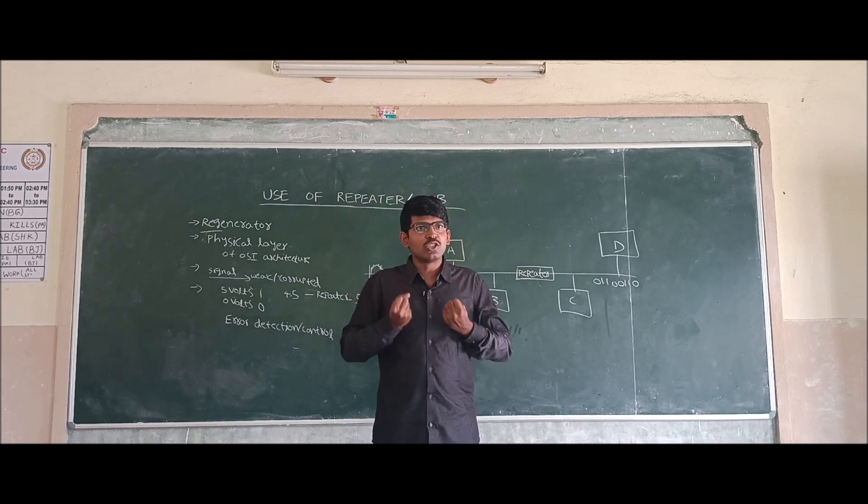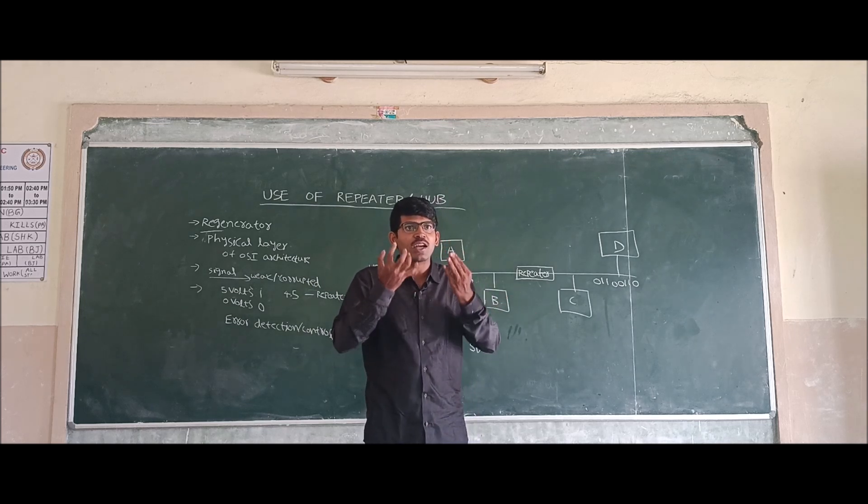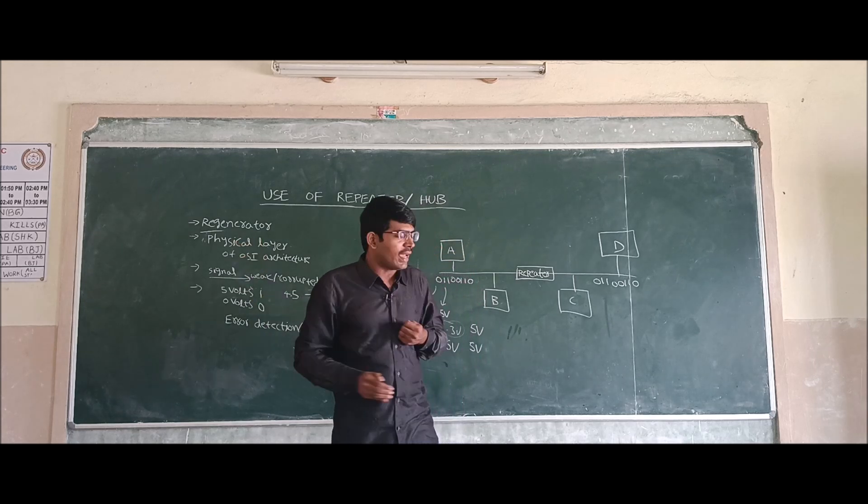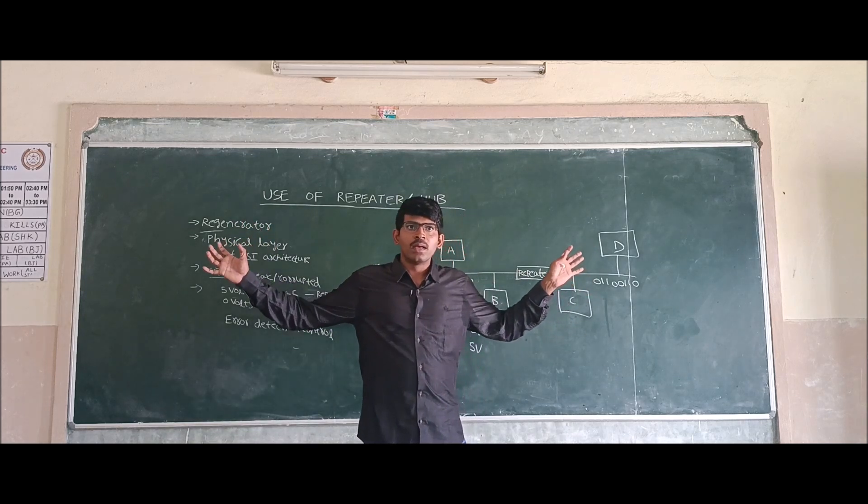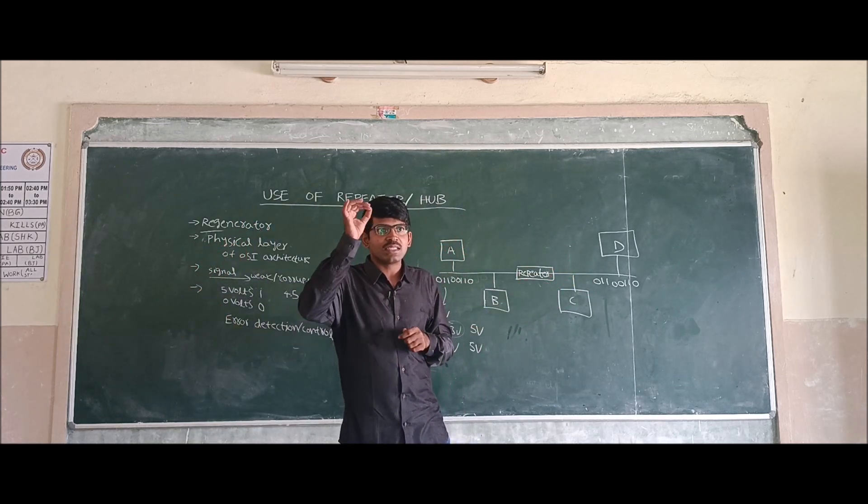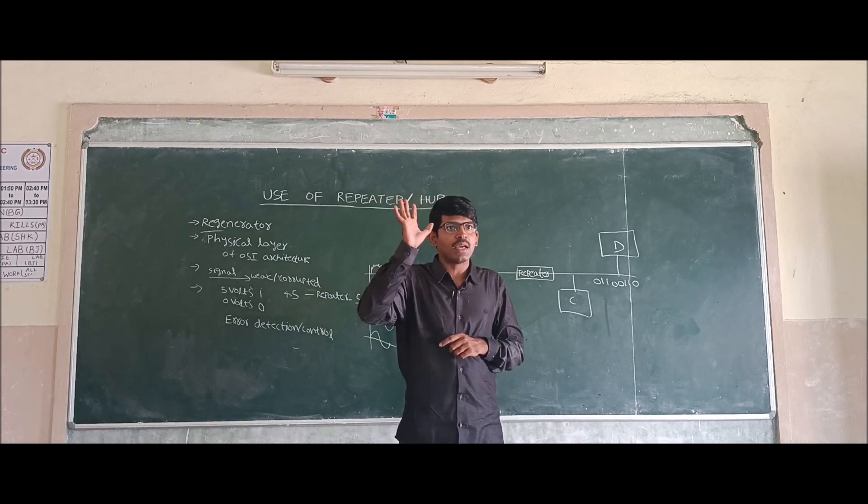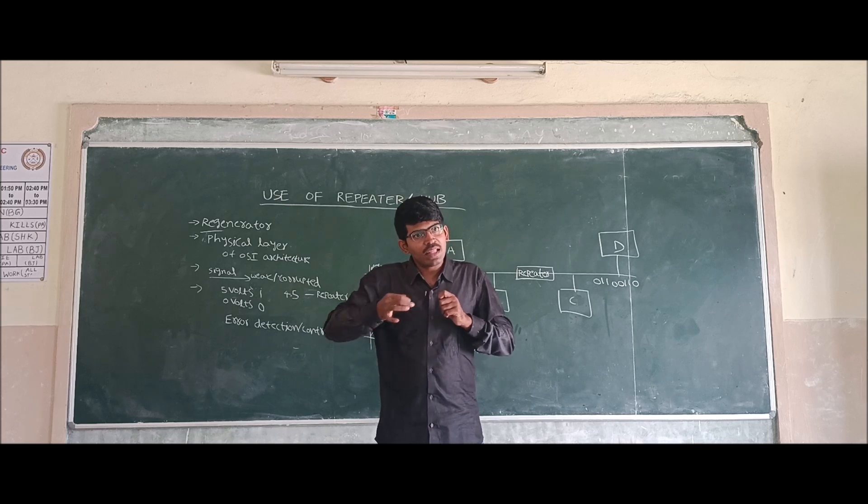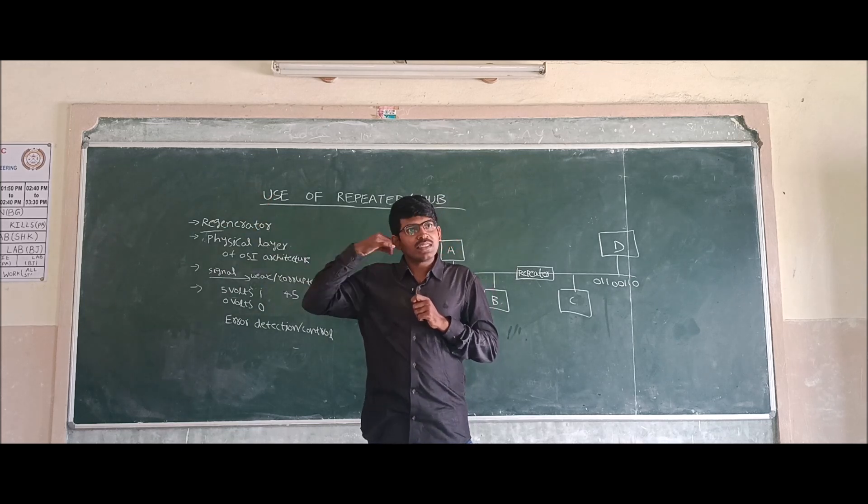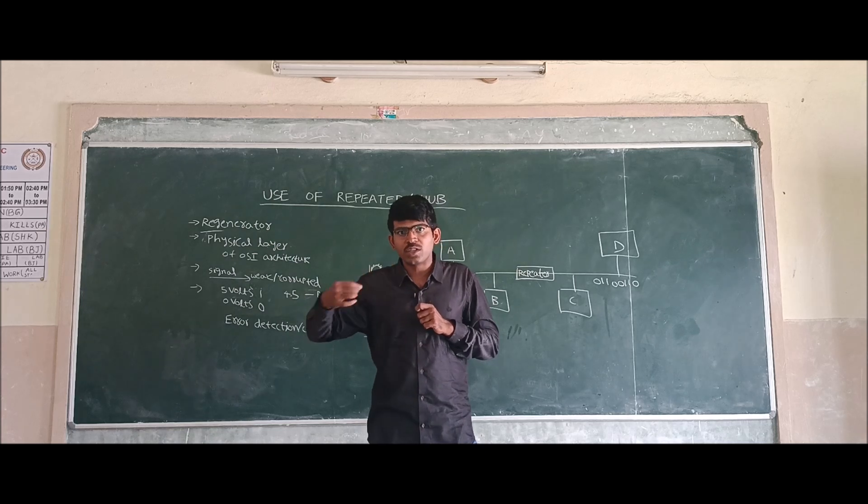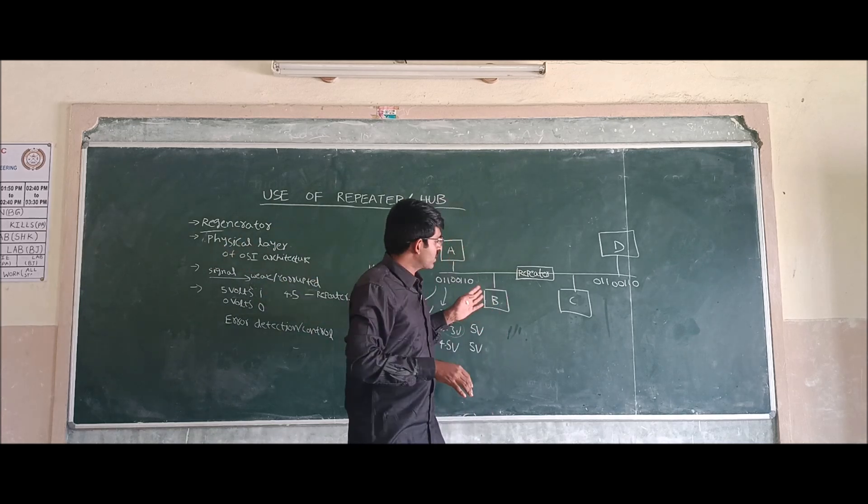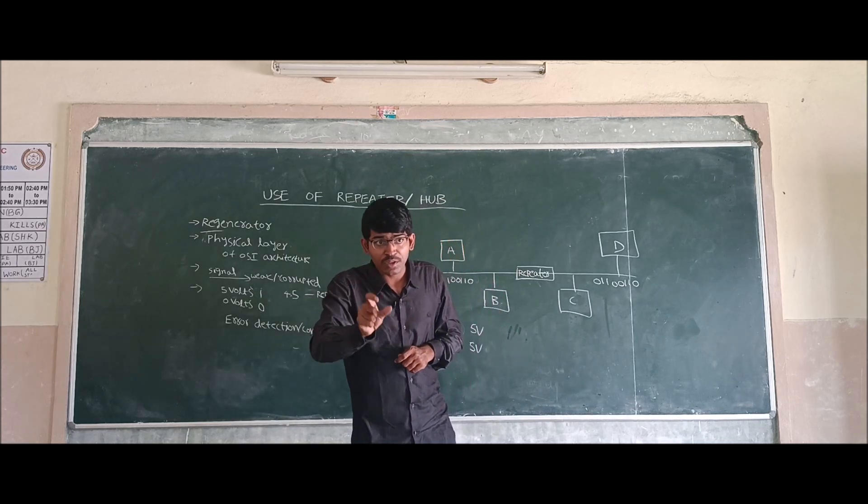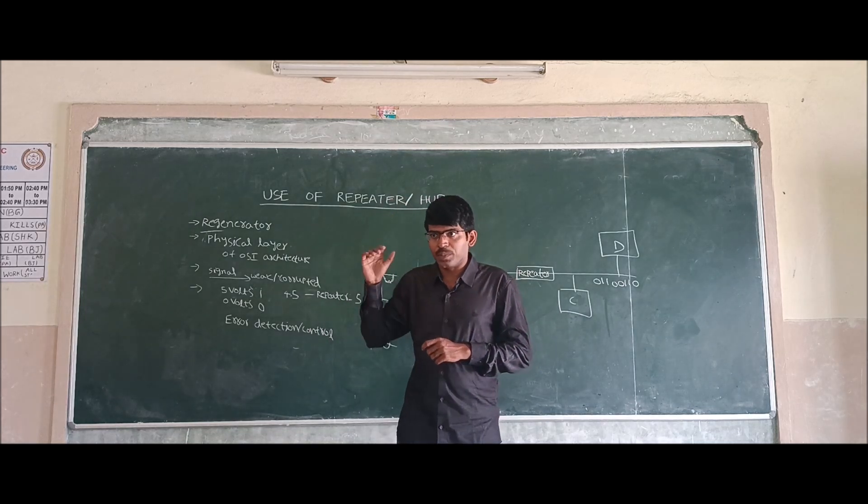A resistor consumes voltage. If we give 5 volts to a resistor, it consumes some and gives the remaining. For a long wire, resistance changes with the length of the material - R is directly proportional to ρL/A. When length increases, resistance increases, causing more voltage drop. Because of the voltage drop, the signal might not reach the final end. That's why we need repeaters in between.